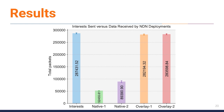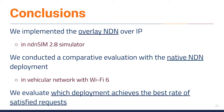This difference is explained by the fact that the wireless network standard offers only a basic service of communication for broadcast transmissions, as a consequence reducing the performance of this traffic. In this paper, we implemented overlay NDN over IP in NDNSim 2.8 and conducted a comparative evaluation with native NDN deployment in a vehicular network with Wi-Fi 6.